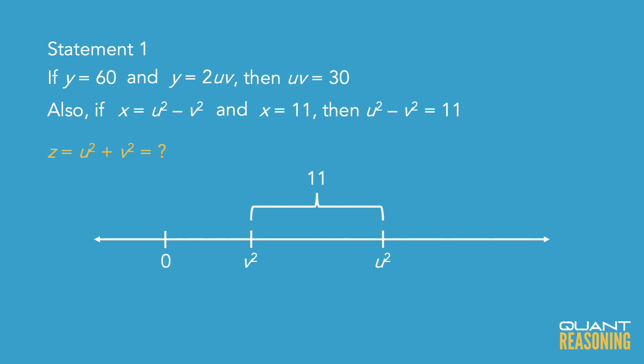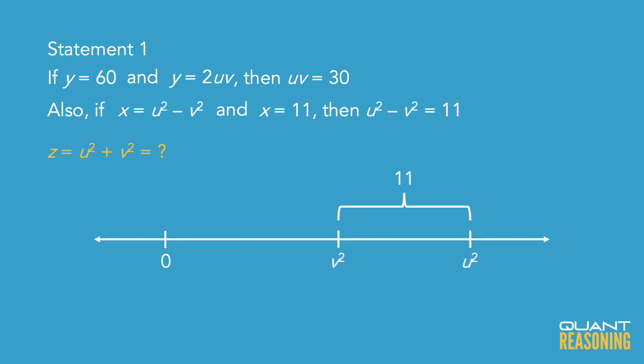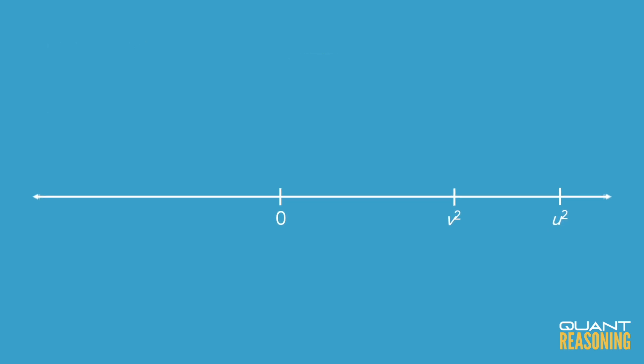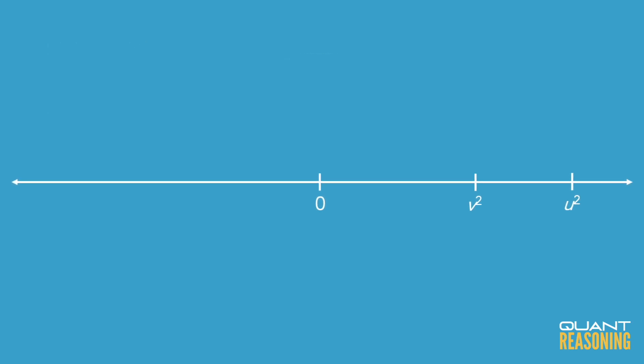I don't know exactly where they are, but they must be to the right of zero because a square can't be negative. And we know the difference between them is 11. But think about what happens if we try to push u squared up the number line — v squared would have to go up with it to keep that gap of 11 between them. But remember, we know the product of uv is 30. And if u squared and v squared are both moving up, u and v are also both moving up. But what would happen to the product of u and v if they're both moving up?